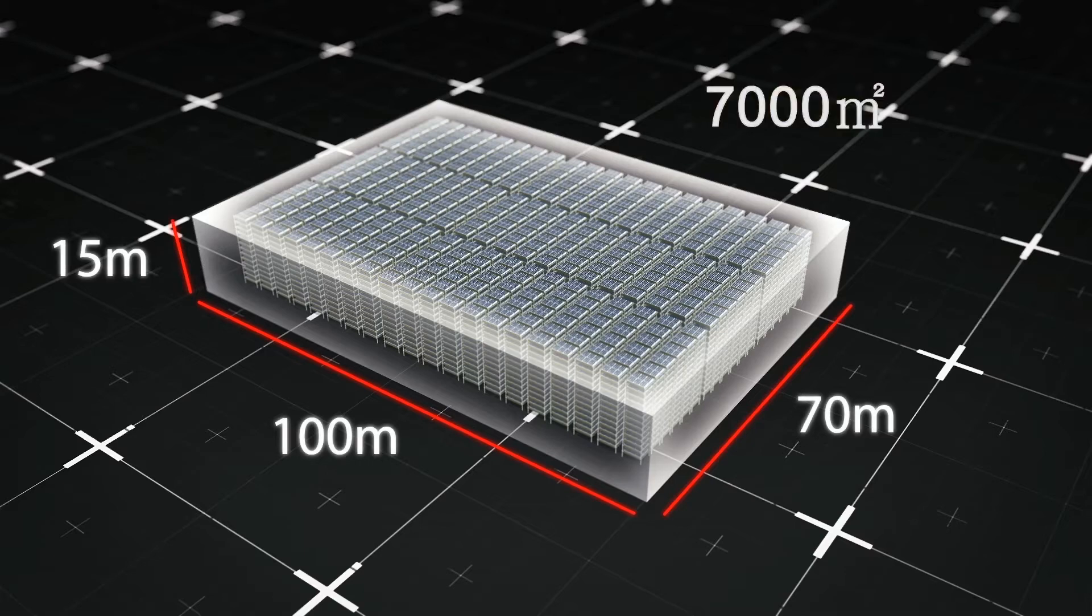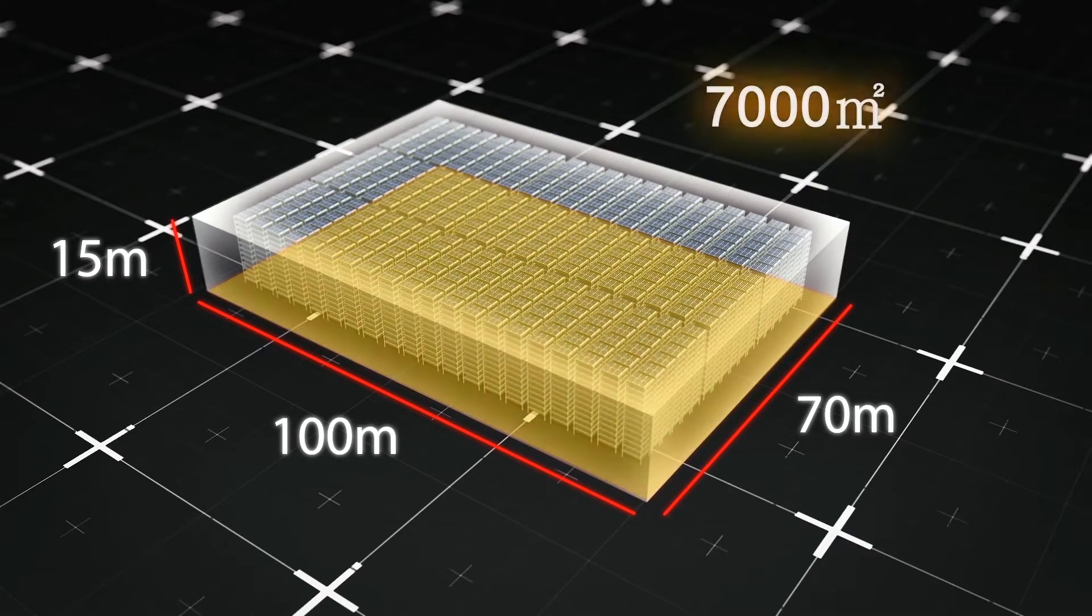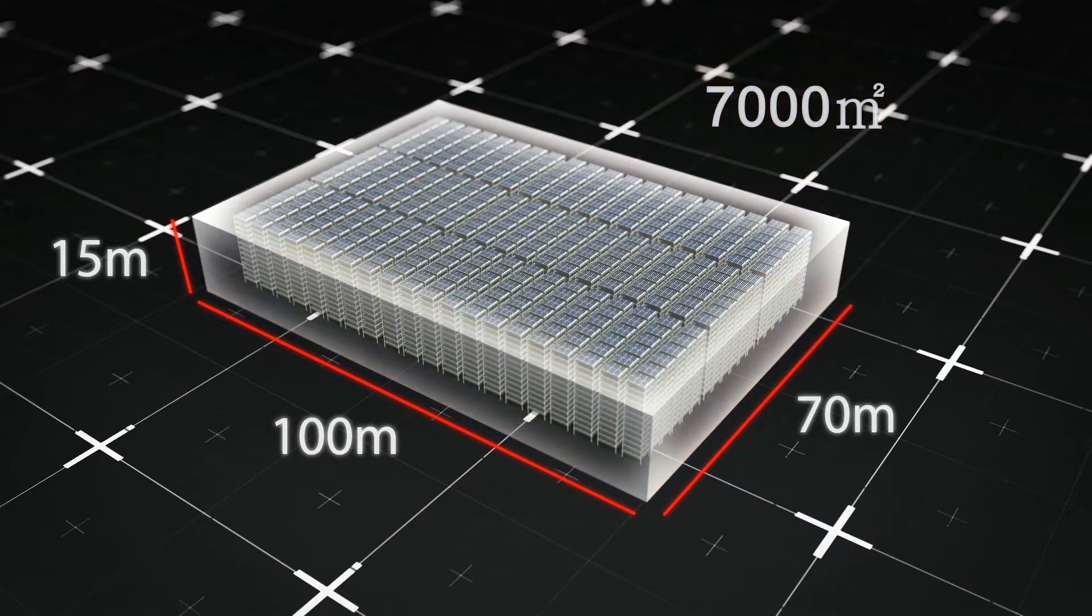The new Nordic Harvest Vertical Farm stands 14 layers high in a 7,000 square meter facility that's around four stories high.